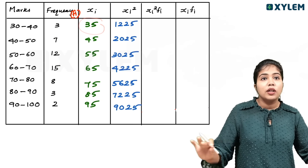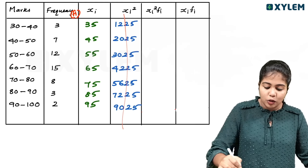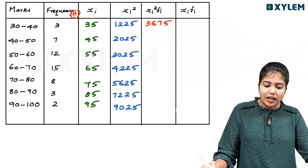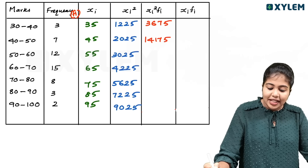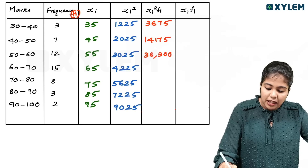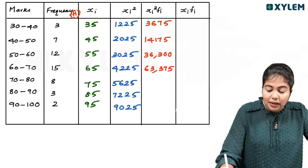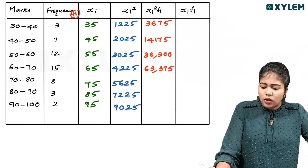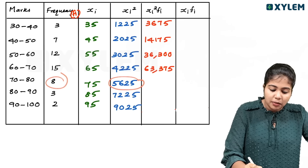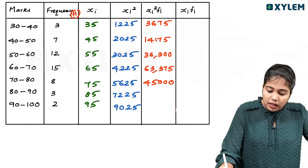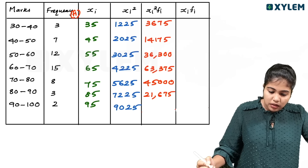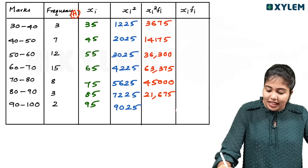Now computing xi squared fi: 2025 multiplied by 7 is 14175. 3025 into 12 is 36300. 4225 into 15 is 63375. 5625 into 8 is 45000. 7225 into 3 is 21675. 9025 into 2 is 18050.